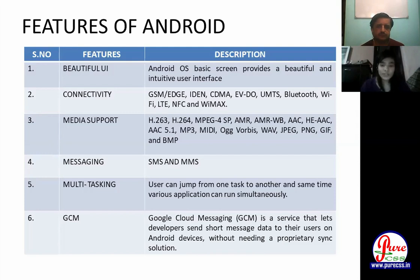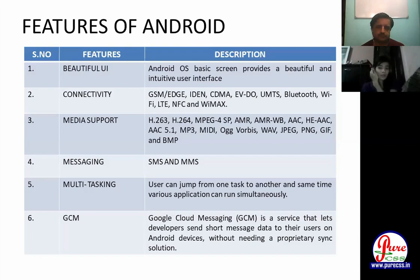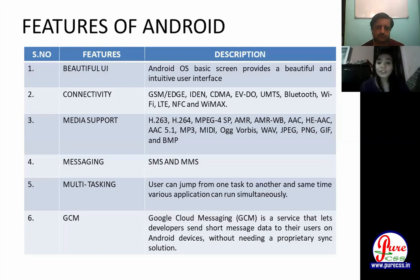Fifth feature is multitasking — a user can jump from one task to another and various applications can run simultaneously. For example, you can switch from Instagram to YouTube as well. The last feature is GCM — a service that lets developers send short message data to users on Android devices without any syncing.